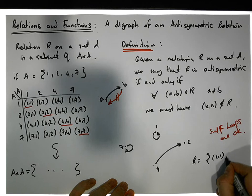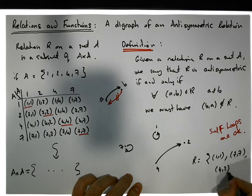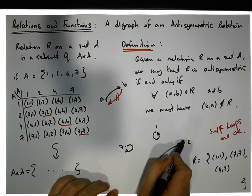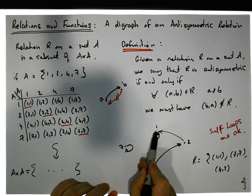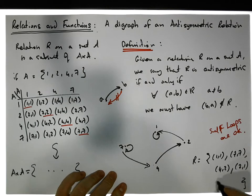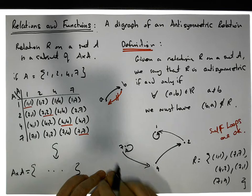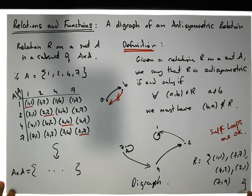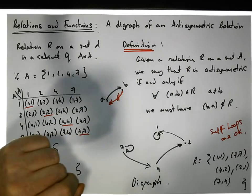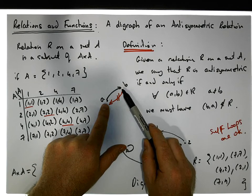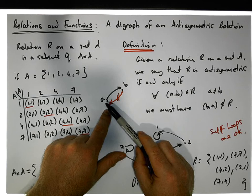For example, the relation containing (1,1), (7,7), and (4,2) is anti-symmetric so far. I can also add (2,1) — that's fine because I'm not going back from 1 to 2. I can add (7,4) — that's fine because I'm not going back from 4 to 7. So this relation, represented as this digraph, is still anti-symmetric. To recap: self-loops are okay, but you cannot have an edge leaving one node to a different node and then an edge coming back.